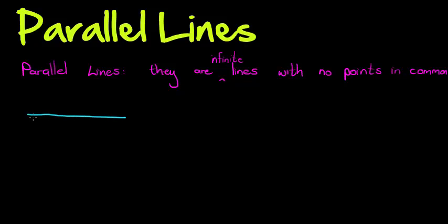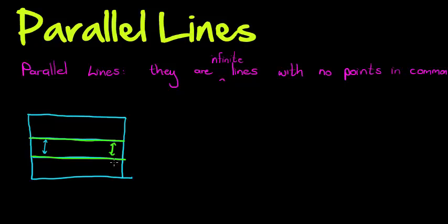We get different types of parallel lines. For example, we said that parallel lines are lines that never intersect. Now if we work on a flat surface, there are lines that have the same distance between them everywhere. That would be parallel lines on a flat surface.